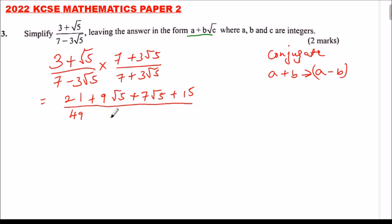But for the sake of just understanding how we go about it, let me multiply 7 by 3√5, that will give us positive 21√5. Minus 3√5 multiplied by 7 will give us minus 21√5.